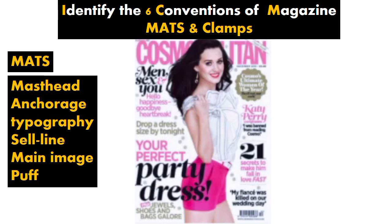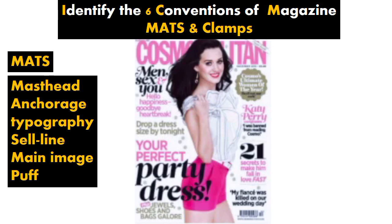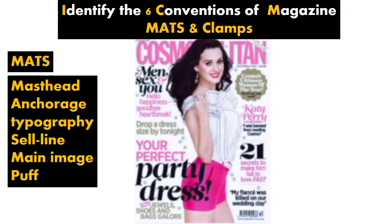For sell lines — all of these are sell lines: 'Hello happiness, goodbye heartbreak,' 'Drop a dress size by tonight,' and 'Your perfect party dress.' All of these are sell lines telling you about articles in the magazine. For the puff — remember a puff is a box or shape with a sell line within it. Here is the puff: a gold, spherical shape with the sell line 'Cosmo's ultimate women of the year — they'll rock your world.' So that is a puff.